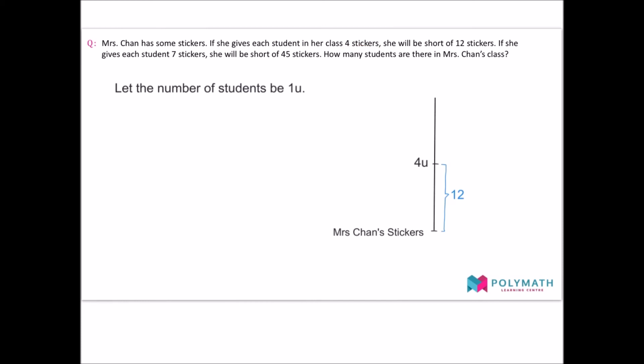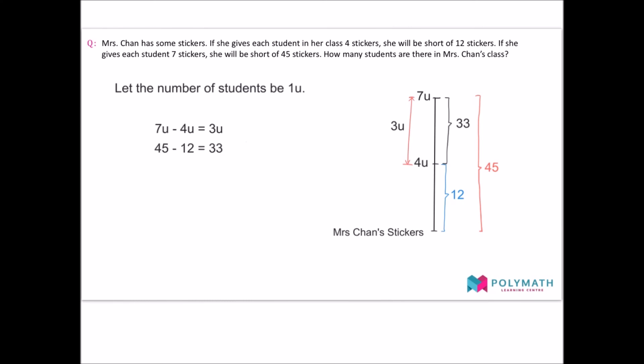Moving on, we read that if Mrs. Chan gives each student seven stickers, she will be short of 45 stickers. As seven units is more than both four units and Mrs. Chan's stickers, we draw seven units at the very top of our diagram and we label the shortage as 45 stickers. We can see from the diagram that the difference between seven units and four units is now not the sum of 45 and 12, but the difference between 45 and 12.